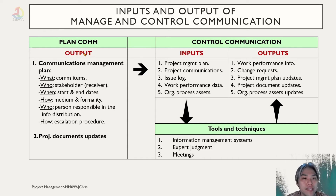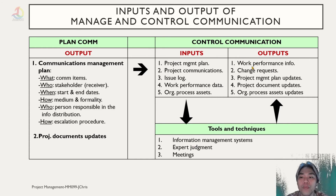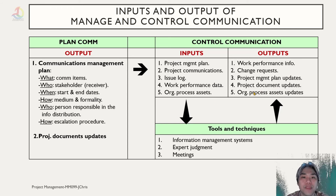Control communication similarly uses the planned communication output as its input, and applies tools and techniques such as information management systems, expert judgment, and meetings. The outputs are work performance information, change requests, project management plan updates, project document updates, and organizational process assets updates.